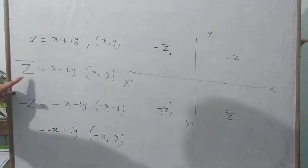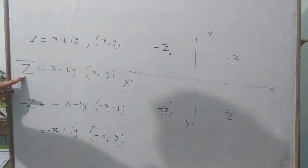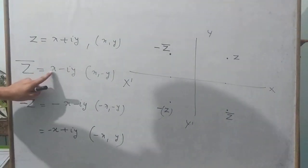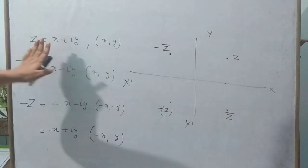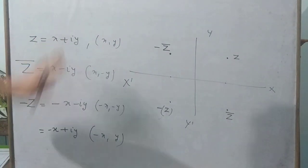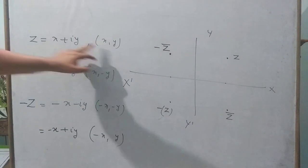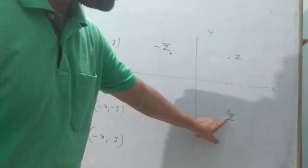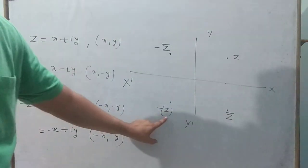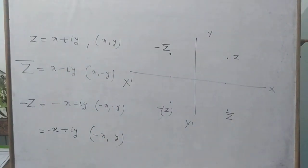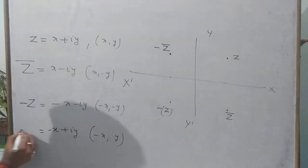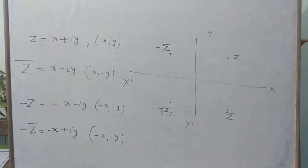The point (-X, Y) represents minus Z-bar, that is negative conjugate of Z, lying in the second quadrant. So this is a simple representation: Z is in the first quadrant, conjugate Z-bar is in the fourth quadrant, minus Z is in the third quadrant, and minus Z-bar is in the second quadrant. This is how we represent complex numbers on the Argand plane.